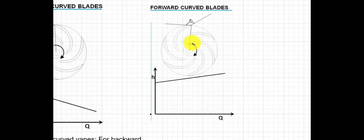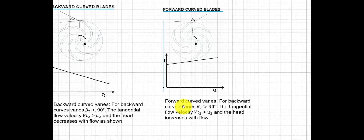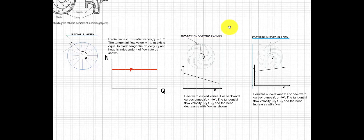Next, we have the forward curve blade. You'll notice the angle is already greater than 90 degrees. If you plot the head versus the volume flow rate, we have an increasing head and also an increasing volume flow rate — as you increase the volume flow rate, the head also increases. For forward curve veins, the angle is greater than 90 degrees, vt2 is greater than u2, and the head increases with the flow. The question is: which blade type is most suitable for industrial use?